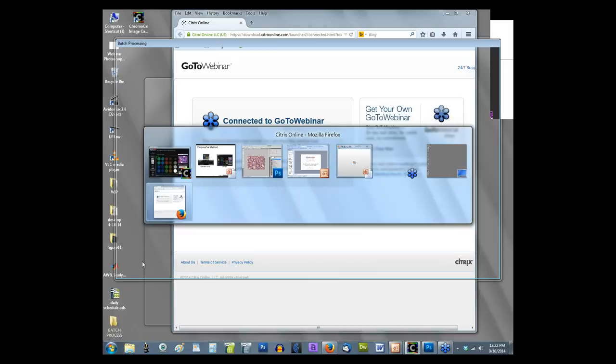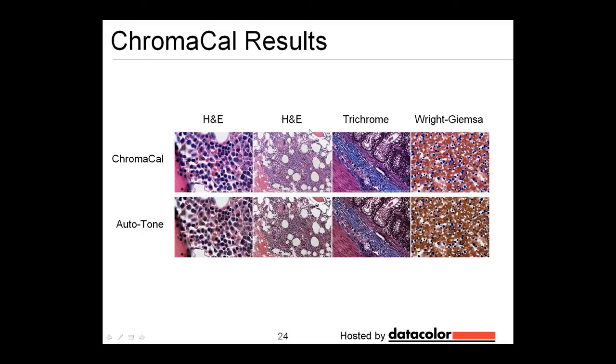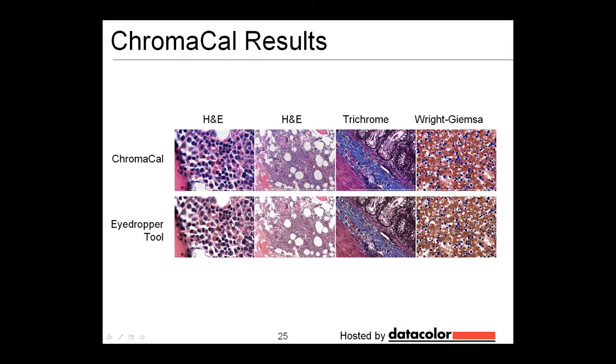And so let me go back to the PowerPoint presentation and show you the Chromacal results. So here are the Chromacal images, the four that we looked at. And you can see that actually, compared to the auto tone used in Photoshop, that it did a really nice job with color. But it also maintained the same contrast level all the way through. If you look at the results compared to the eyedropper tool, obviously the eyedropper tool is overexposed in most cases. But also it's done what I think is a much better job in interpreting the color.